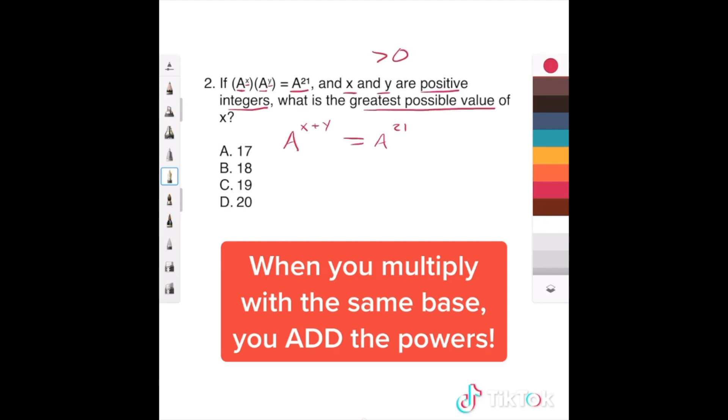It's saying what's the greatest possible value of x? Well, if you've got a scenario like this and the base is the same, you can ignore them. So you have x plus y is 21.